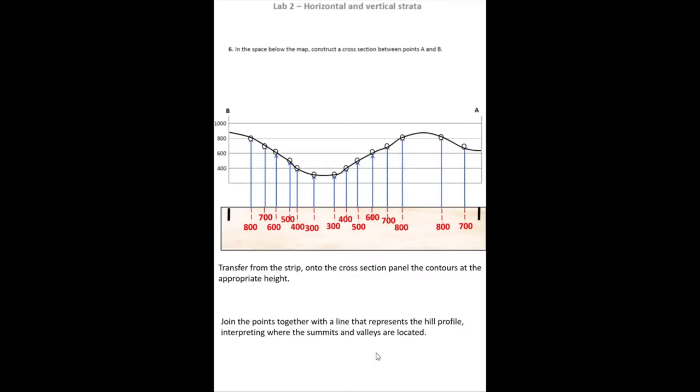And then I join the points together with a line that represents the hill profile. So I'm going to have to estimate where the tops or the brows of the hills along my cross-section would be. But hopefully you can see that by joining those points in that landscape, we get a realistic looking hill profile.